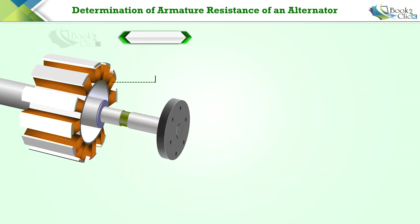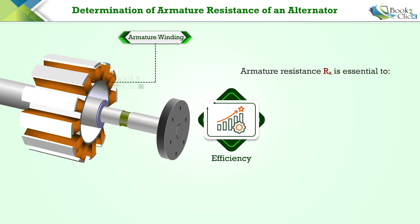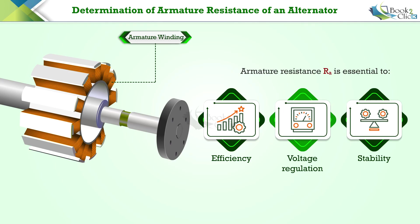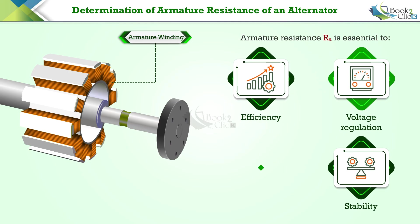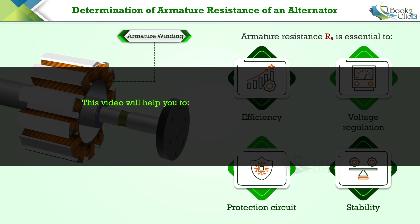The armature resistance value of an alternator, Ra, is essential to calculate its performance analysis factors such as efficiency, voltage regulation, and stability. Armature resistance is also crucial in designing protection circuits for the alternator.